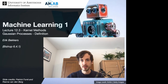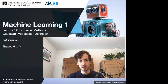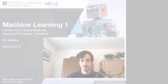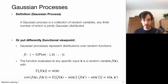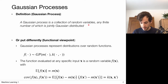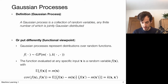We want to work with non-parametric predictive distributions, and the way we will achieve this is via Gaussian processes. A Gaussian process is a collection of random variables, any finite number of which is jointly Gaussian distributed.